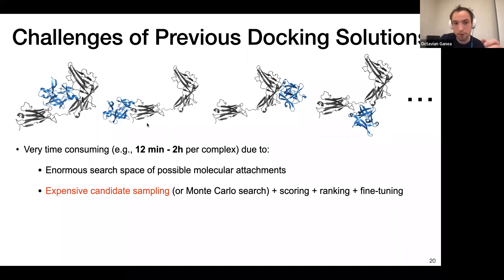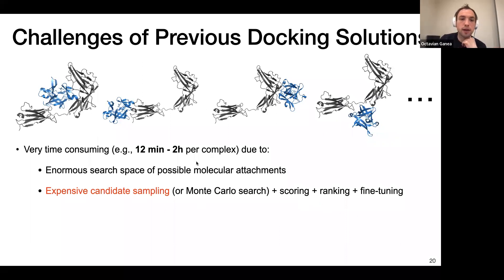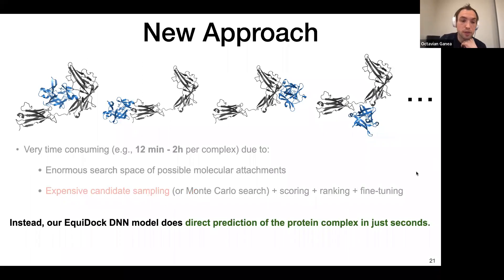Existing methods try to place the two proteins in almost all possible combinations, sampling millions of candidates with an expensive candidate sampling strategy. After scoring them — using energy-based models or deep learning models — there is a ranking step, selecting the top promising candidates which are further fine-tuned. Most existing methods follow this expensive strategy. Instead, what we propose is to bypass this expensive candidate sampling procedure and do a direct prediction of the protein complex, making it run in just seconds.